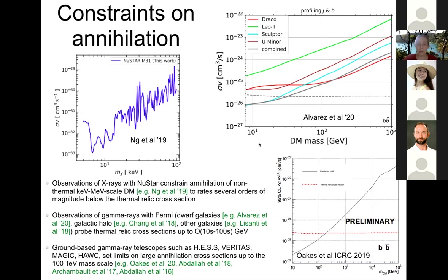As we go to higher masses, there are constraints on dark matter annihilation to gamma rays from looking at dwarf galaxies. This paper by Alvarez et al. is a recent re-analysis of the Fermi gamma ray data on dwarf galaxy constraints. They tried to do a careful analysis of the systematic uncertainties, the dwarf J-factors, and the backgrounds. What they found, in accordance with other studies, is that constraints weaken a bit with these uncertainties, but through a number of channels you can generally test dark matter annihilating with the thermal relic cross-section up to mass scales of several tens of GeV.